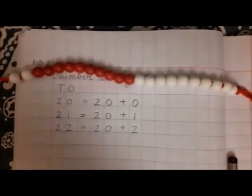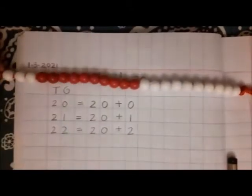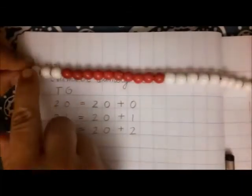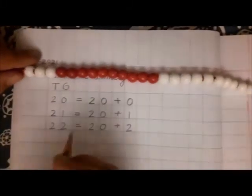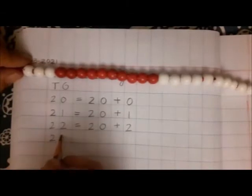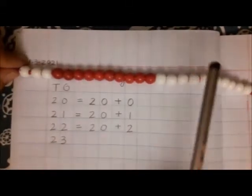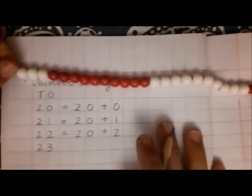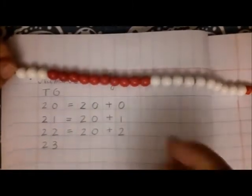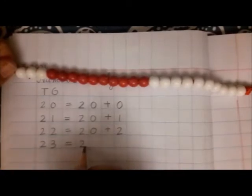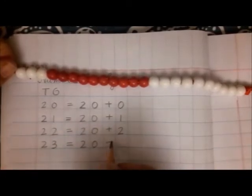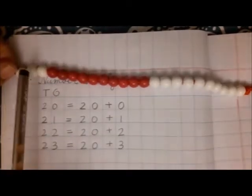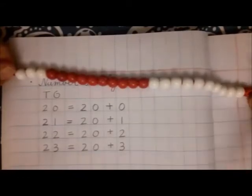Now one more has come. Two tens and one, two, three - three extra. So twenty-three. Twenty, twenty-one, twenty-two, twenty-three. How is twenty-three made? Two tens. Twenty-three is two tens and three extra, three ones. This is number 23.